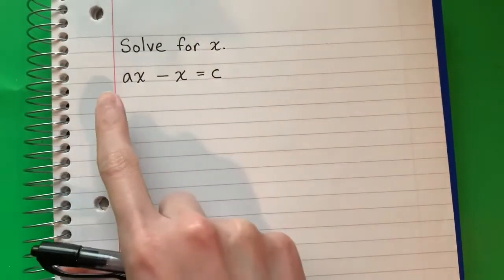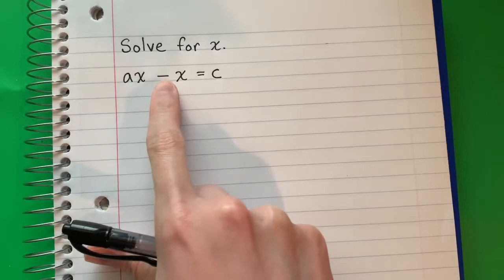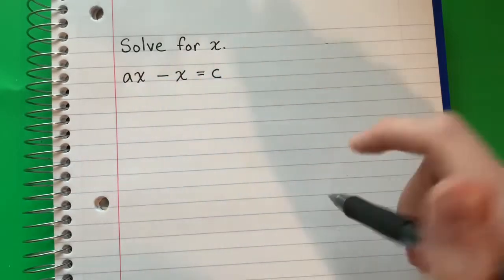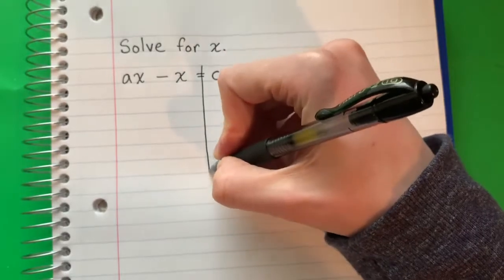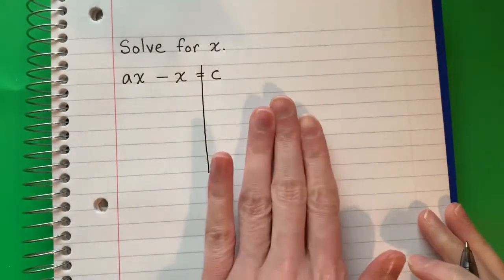Solve for X in the equation AX minus X equals C. The first thing I'm going to do is draw a line on the equal sign to separate the left from the right.